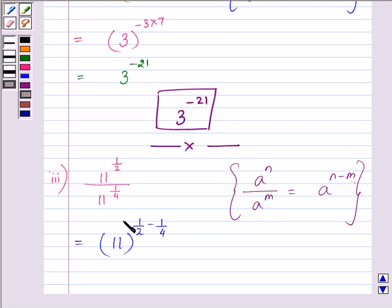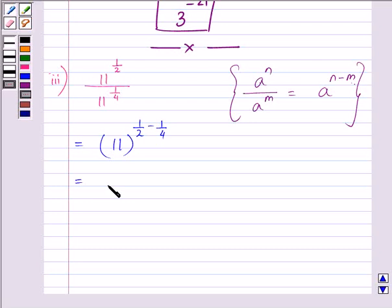We have subtracted the exponents and let us solve these two fractions. 4 is the LCM and we have 2 minus 1, which is equal to 11 to the power 1 by 4. So this is the answer to the third part.